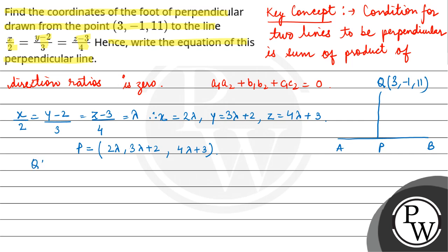Now, vector QP will be equal to... the coordinates of Q are given as (3, -1, 11). So QP becomes (2λ - 3, 3λ + 2 - (-1), 4λ + 3 - 11), which is (2λ - 3, 3λ + 3, 4λ - 8). Direction ratios for QP are: A1 = 2λ - 3, B1 = 3λ + 3, C1 = 4λ - 8. And A2 = 2, B2 = 3, C2 = 4 from this equation.